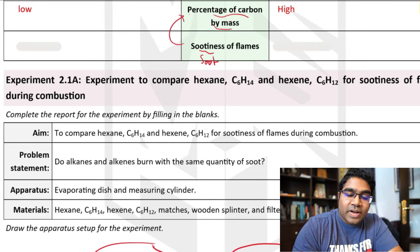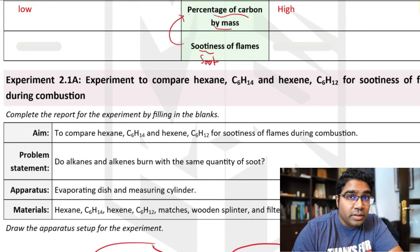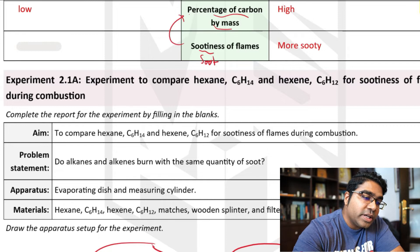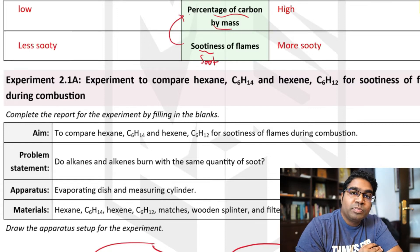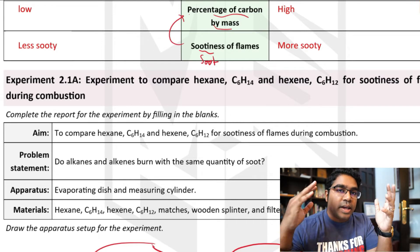Because alkenes have a higher percentage of carbon by mass, and soot is essentially carbon, the sootiness of alkenes is actually higher than alkanes. Because alkanes actually have a lower percentage of carbon by mass.